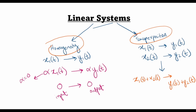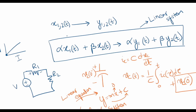The principle of superposition says that if I have an input x1(t) that leads to an output y1(t), and similarly another input x2(t) which leads to another output y2(t), then a linear combination of these two inputs should also equal a combination of their respective outputs.